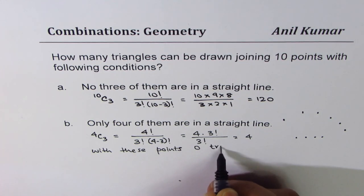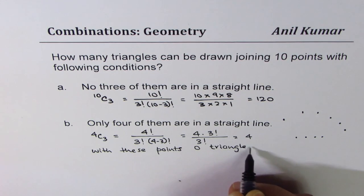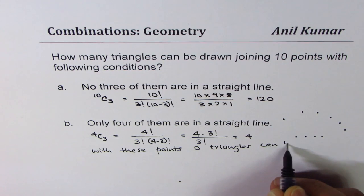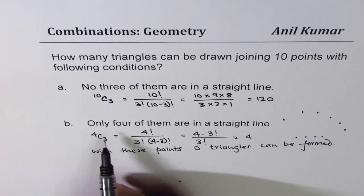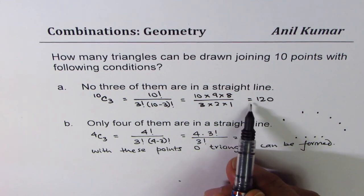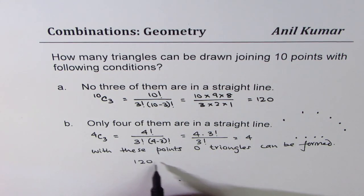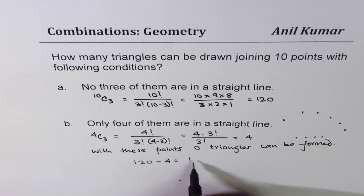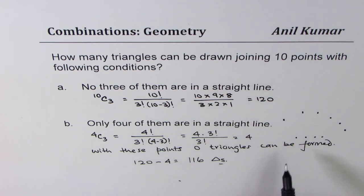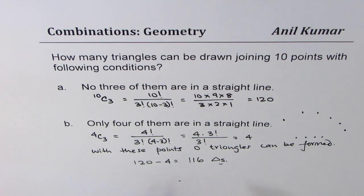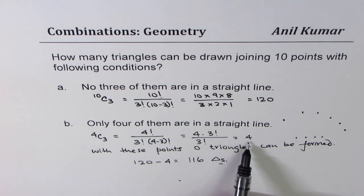Zero triangles can be formed from collinear points, so the total number of triangles should be 120 minus 4. Therefore we get 116 triangles. With 10 points, out of which 4 are collinear, we can form 116 triangles. We had included those 4 extra which we needed to remove.